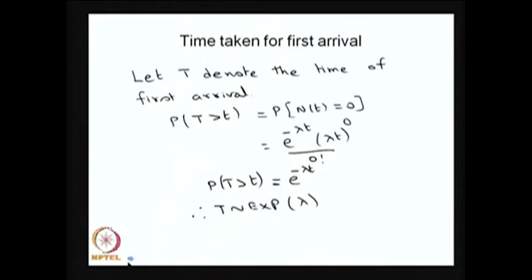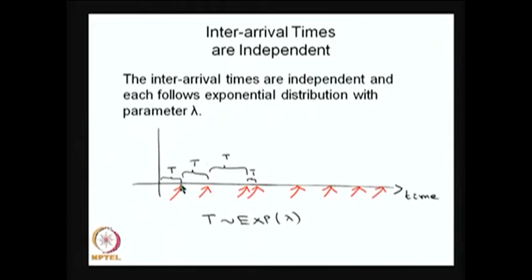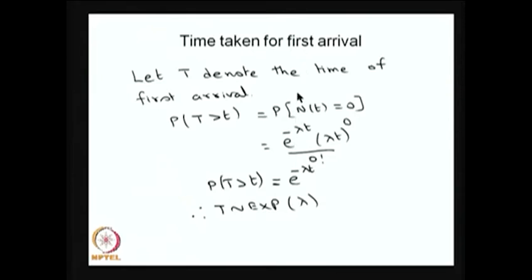This can be proved easily. Let T denote the time of the first arrival. We want to find the distribution of T. Since T is a continuous random variable (an arrival can occur at any time), we find the complement CDF first and use that to determine the distribution. We start with the probability that the first arrival takes place after time t.